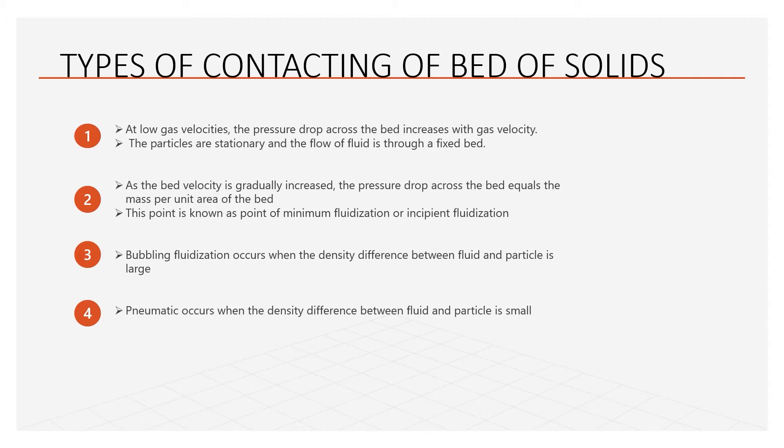Now we go to the second one, which is minimum fluidization. As the bed velocity is gradually increased, a certain velocity is reached when the bed starts expanding. At this point, the pressure drop across the bed equals the mass per unit area of the bed. This point is known as the point of minimum fluidization. The movement of solid is at superficial velocities far below the terminal settling velocities of the solid particles.